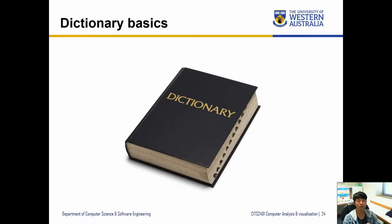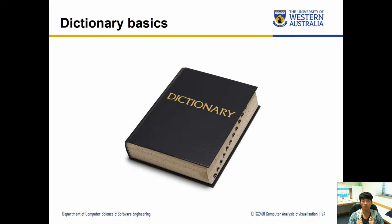Hey guys, welcome back. In this video we'll be covering dictionaries. You can think about dictionaries just like a physical dictionary where you know the word and you're trying to find the meaning of that word. The same concept applies in programming — a dictionary has a key and value pair, where the key is a representation of the values it stores, and those values can be anything like strings, ints, lists, sets, or even another dictionary.